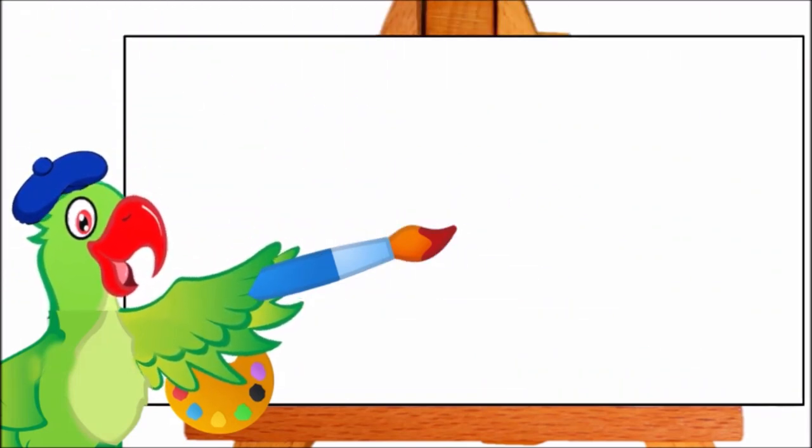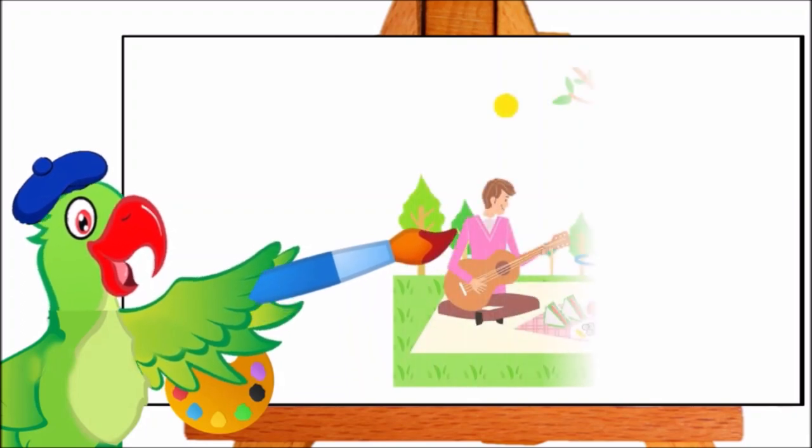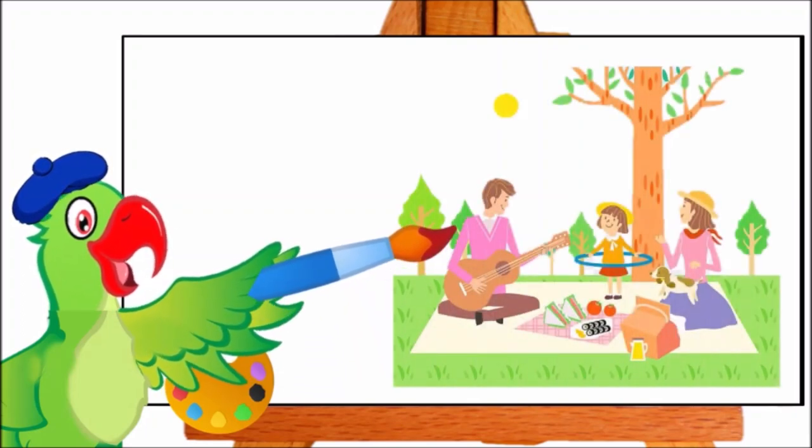Now look, what am I painting next? Wow. Can you tell me children, what is the family doing? Correct. They are having a picnic. They have come for a picnic to P-per park. P-per picnic. P-per park.